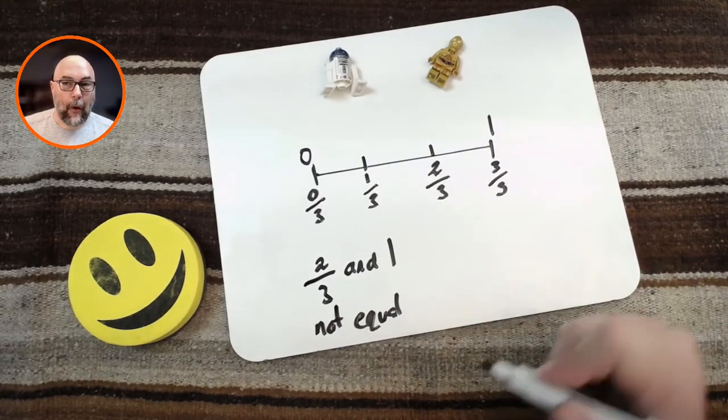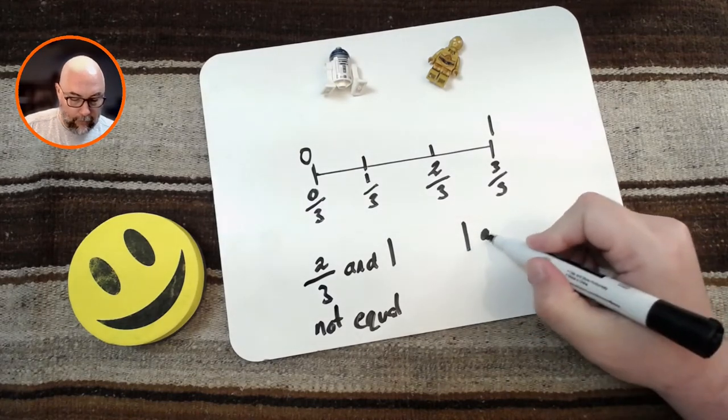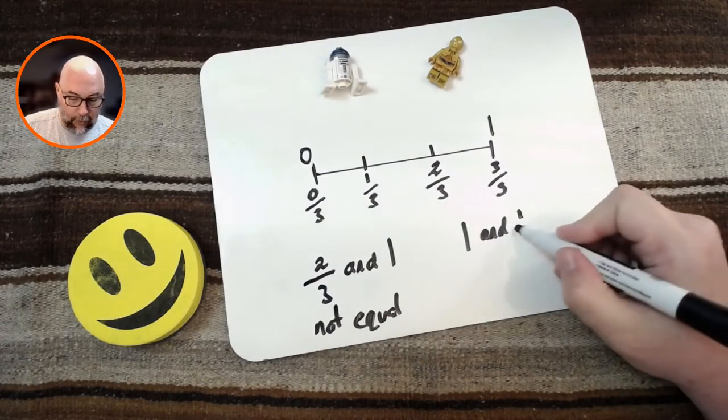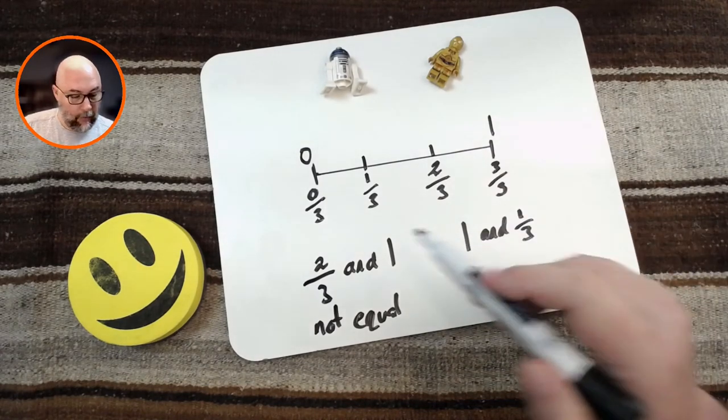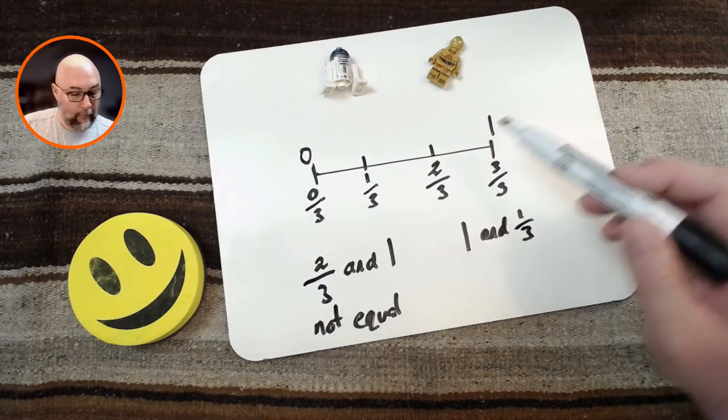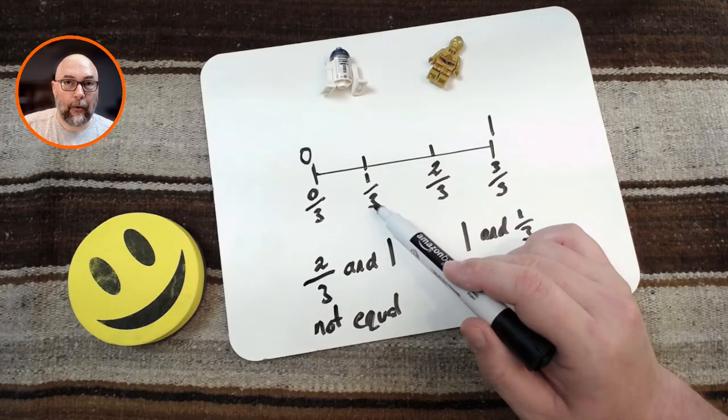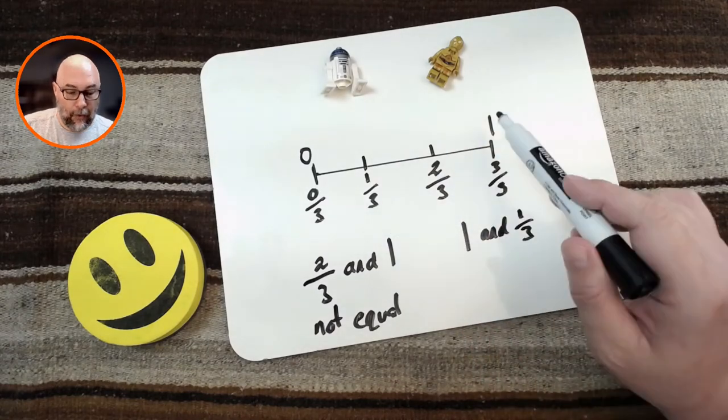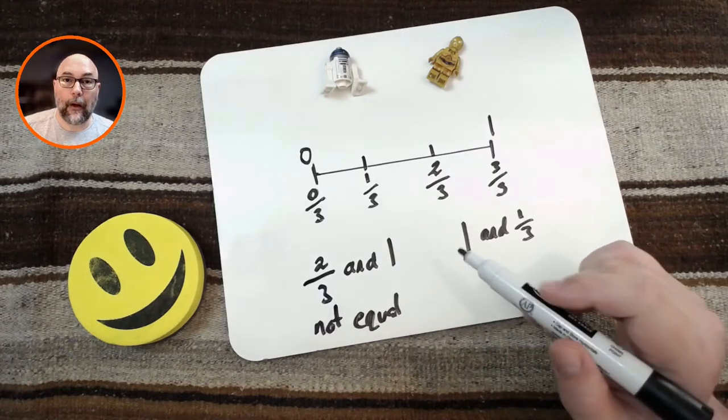Now, what about the number 1 and 1 third? Are they equal? Well, let's see. The number 1 is over here, and 1 third is down here. So when I look at them, the 1 and the 1 third are not in the same place, so they are not equal.